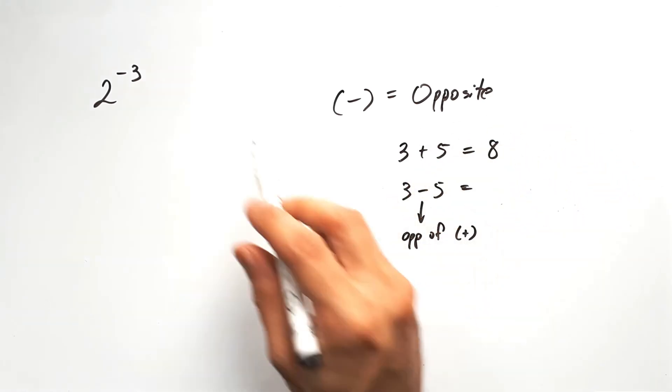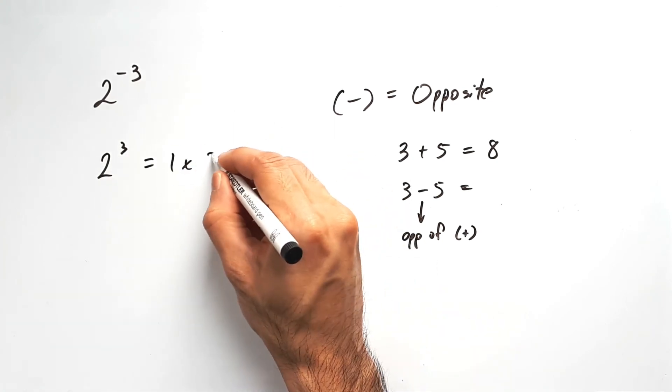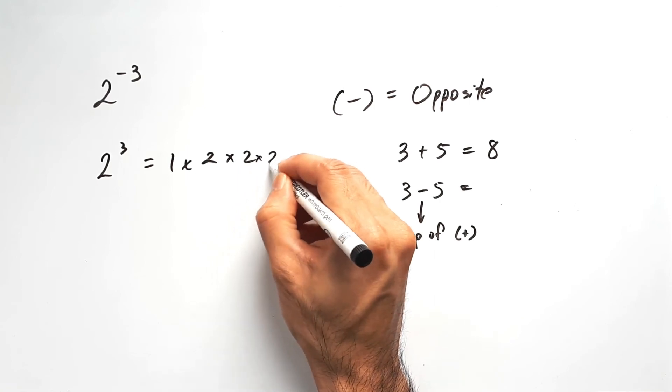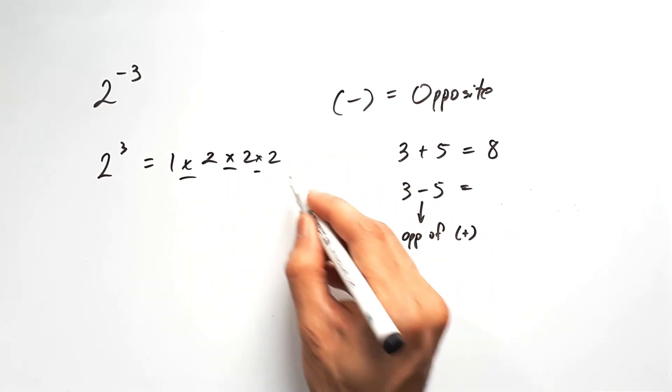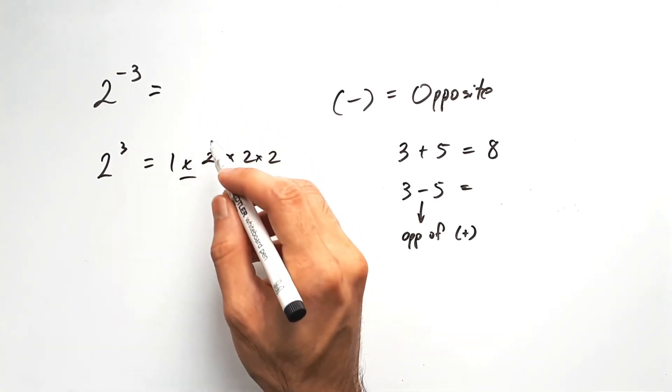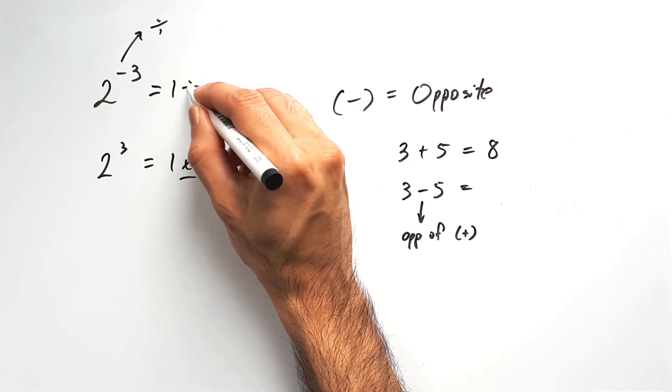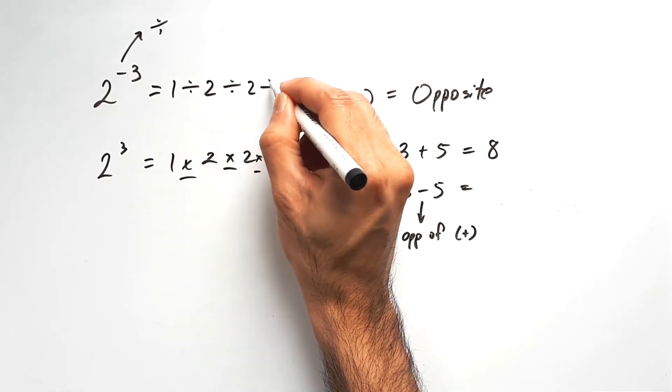But in the context of powers, because if you recall, 2 to the power of 3 is 1 times 2, 3 times. The operation involved was multiplication. So in the case of negative 3, it means divide. So 1 will divide 2 3 times.